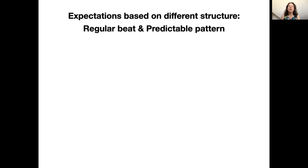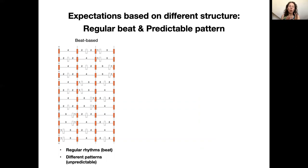To illustrate this, I will now play you an example rhythm from our study with a regular beat but unpredictable pattern. To create this sequence, we concatenated varying rhythmic patterns that all have a regular beat, depicted here as the orange events. You can tap along to the beat in this rhythm, but you cannot predict each single tone in the pattern.